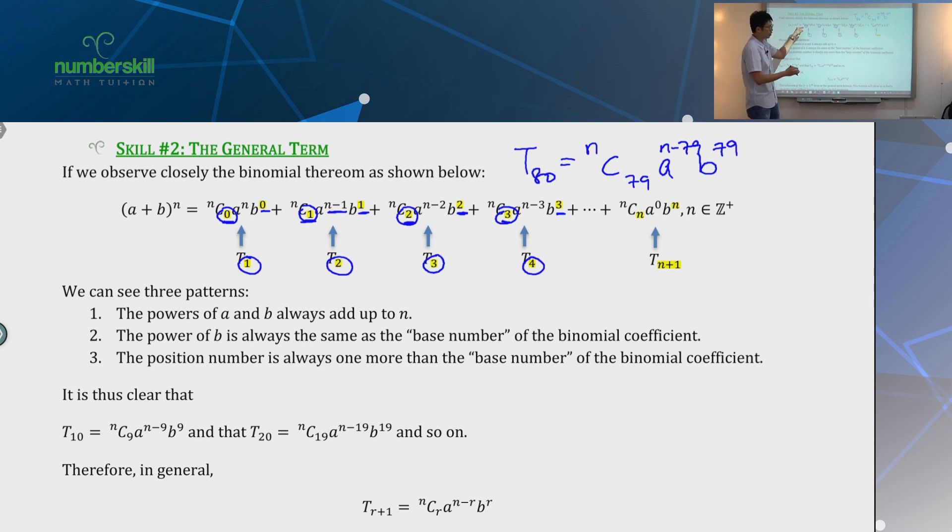So the position number is related to the NcR. The R is the same as the power of B. The B is the same, well, it's related to the power of A. And therefore, you like that, trace, trace, trace, you can always trace out the term that you want. So there you go.